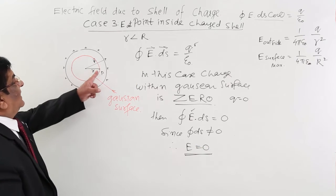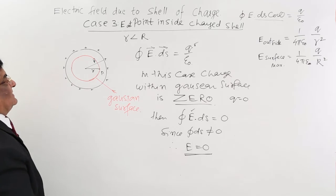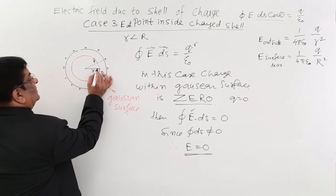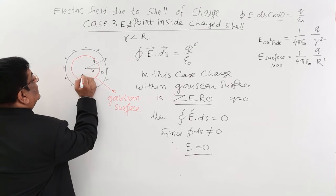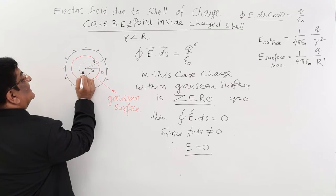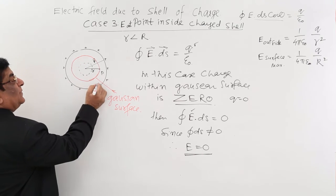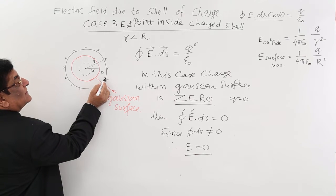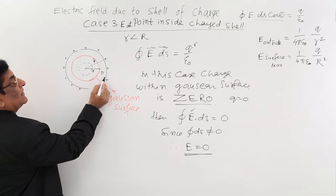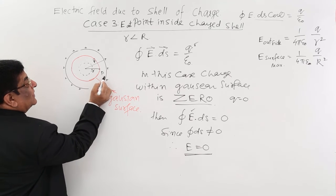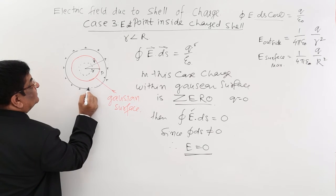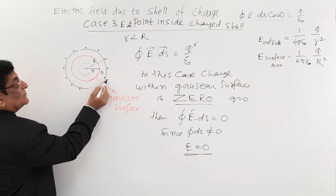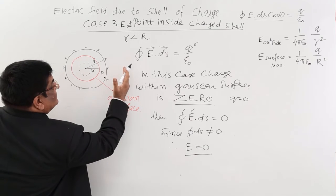That means electric field at P is zero. Now if I take this P here, then this will be my Gaussian surface. Again inside, no charge. If P is here, very close to surface but inside, just touching the surface, even then if I draw a Gaussian surface, this charge lies outside the surface.